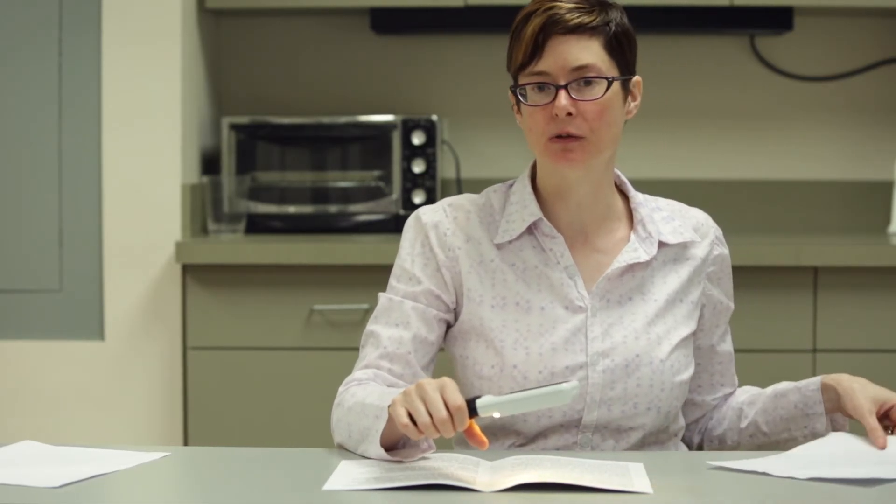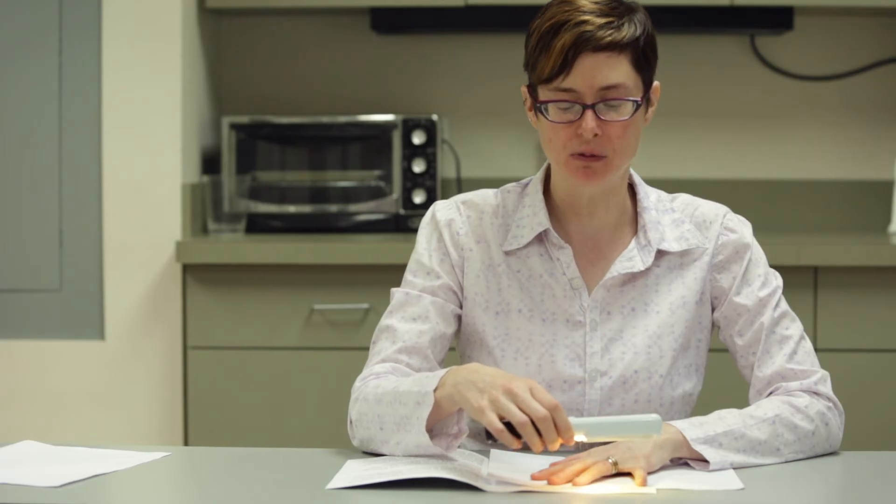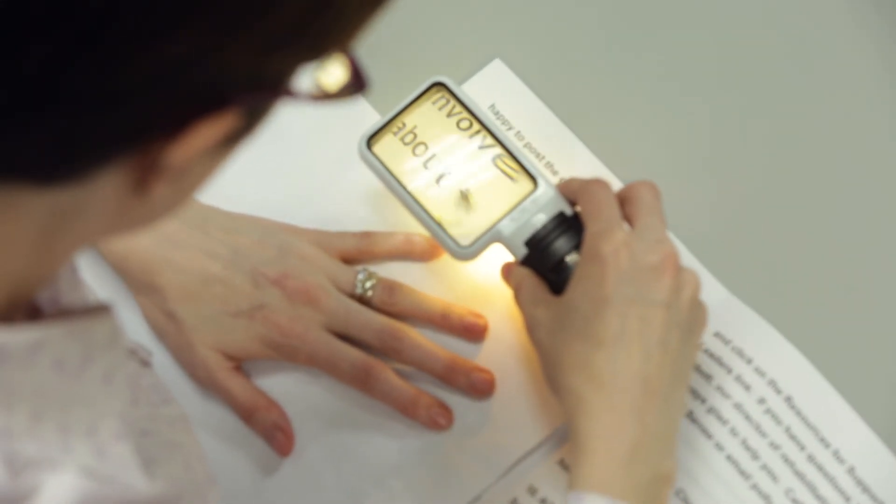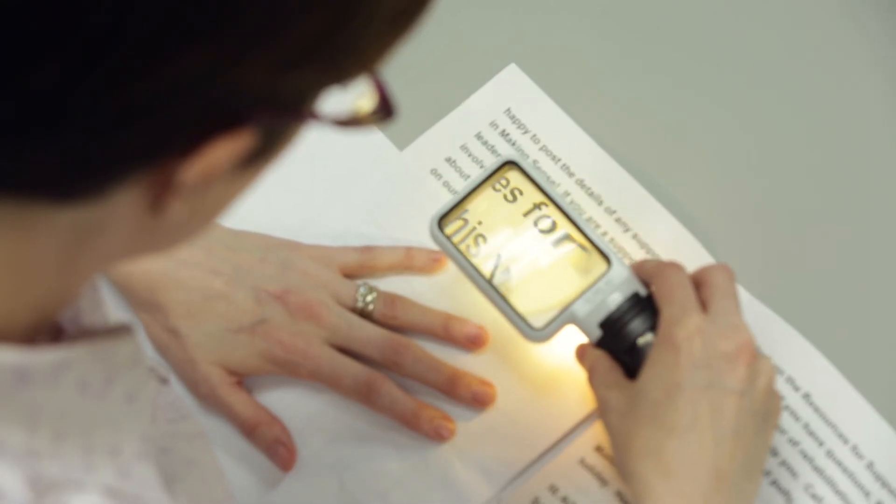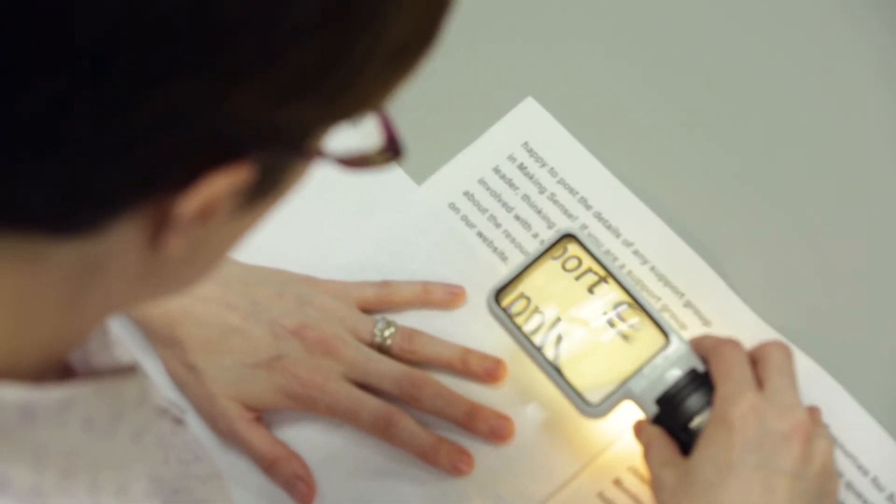In addition to that technique, you might also want to consider using a blank piece of paper, a ruler, or some sort of straight edge that will block out the rest of the text, and then slide that down line by line to help you keep on track.